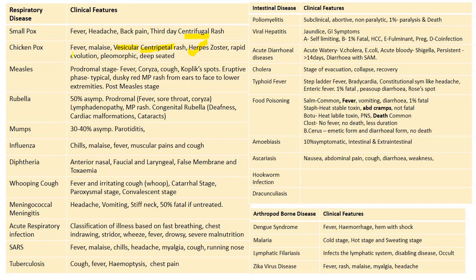Herpes zoster may be a latent infection. Chickenpox has rapid evolution and will be pleomorphic, meaning it contains all stages of the rash: macule, papule, vesicle, pustule, and scab. All stages will be present simultaneously — this pleomorphic nature is a landmark for chickenpox. It is a deep-seated rash.